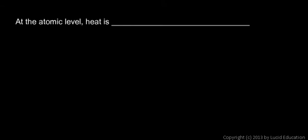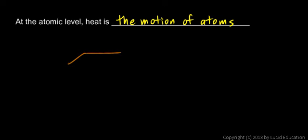Fundamentally, you need to know that at the atomic level, heat is the motion of atoms — molecular motion. Atoms are constantly moving. Everything is made of atoms, and all of those atoms are moving all the time. So if you have something like the top of your table, it looks like it's just still. Here are the legs of the table.